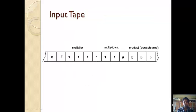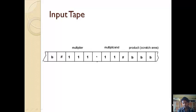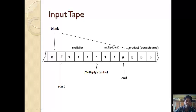Here we have an input tape to explain the multiplication. On either end we have blank spaces. Hash is used to mark the start and stop symbol of the state. We write three 1s and then use a star symbol for the multiplication. The multiplicand is written next, then the product will be printed on the right of the hash end mark. The blank spaces are mentioned here, and multiplication is represented as a star.